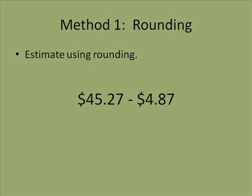We're going to start with one that we've used before, which is rounding. The problem says estimate using rounding and the problem is $45.27 take away $4.87.